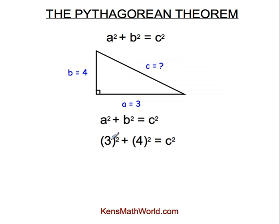Now we're going to square these numbers. 3 squared means 3 times 3, and that's 9. 4 squared means 4 times 4, and that's 16. So now we have 9 plus 16 equals C squared. And we need to add the 9 and the 16. That will give us 25. So now we have 25 equals C squared.